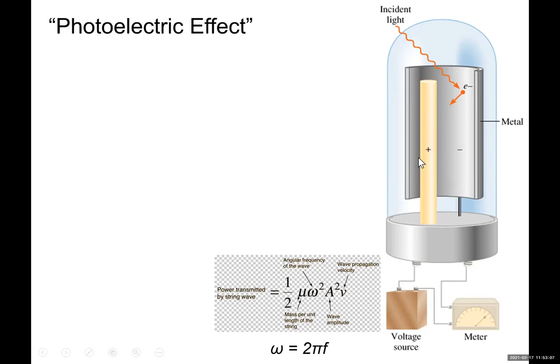And if you have a positive terminal here, electrons are going to start a current. So the negative terminal of this battery is connected to the metal, positive terminal to this electrode here. If the metal is releasing electrons upon using certain light, then you will see a current here. The meter will show that electrons were released by the metal.